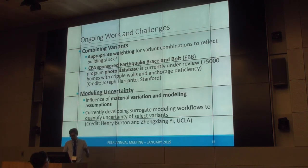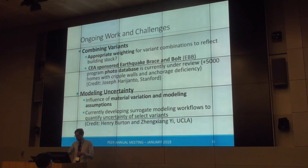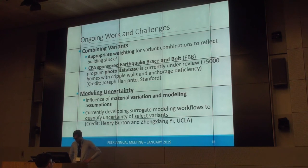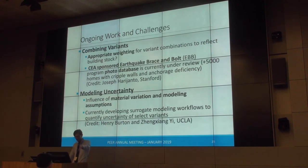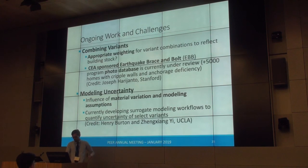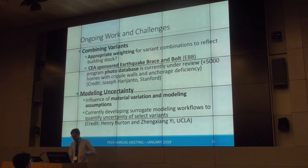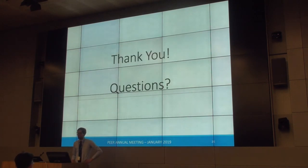One other issue is going to be the treatment of modeling uncertainty. Aside from looking at deterministic variant combinations, we're also going to be interested in properly quantifying material variation and modeling assumptions for essentially a single set of variant settings. One thing currently being done with our working group five partners Henry Burton and Zhang Zheng-Yi is developing surrogate modeling workflows in order to quantify the uncertainty for select variants. That's all I have — I hope I at least gave some interest. That's my overview of the kinds of things we're working on to extend this into completion. Thank you.